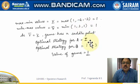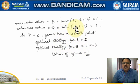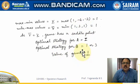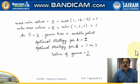The maximin value of 1 is present in the first row, so the optimal strategy for player A is the first row. The minimax value of 1 is present in columns one and three, so the optimal strategy for player B is either column one or column three. The value of the game is 1.